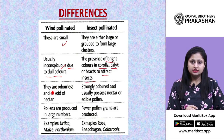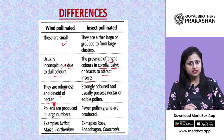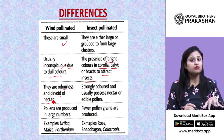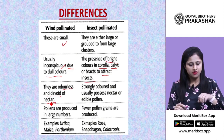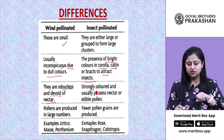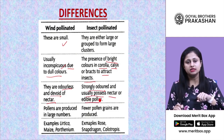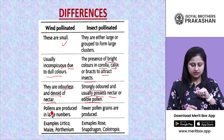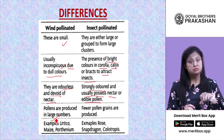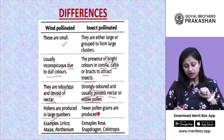Wind-pollinated plants are odorless, have no fragrance, and are devoid of nectar — nectaries are absent — so insects generally do not visit such plants. Insect-pollinated plants are strongly scented and usually possess nectar or edible pollen. Wind-pollinated plants produce pollen grains in large numbers due to high wastage chances, while insect-pollinated plants produce fewer pollen grains.